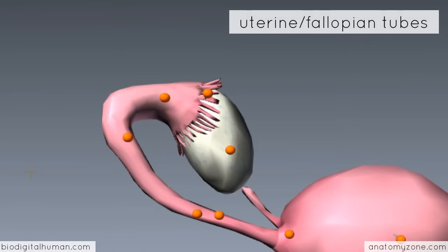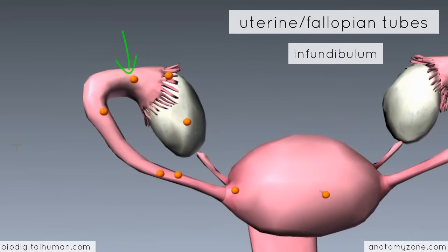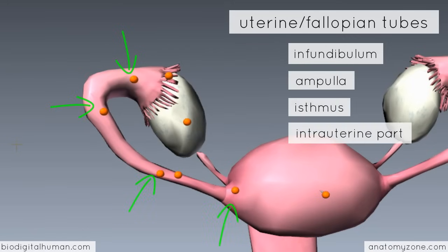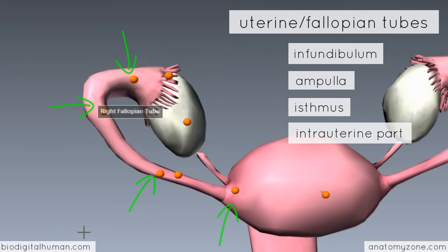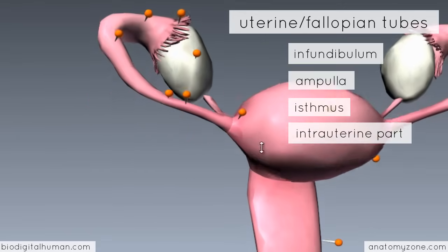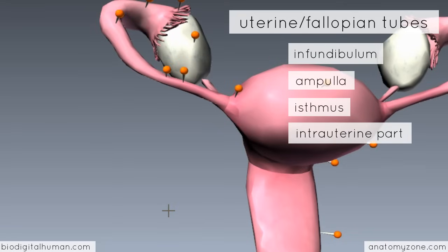The uterine tube has four parts: the infundibulum, the ampulla, the isthmus, and the intrauterine part. The fimbriae lead into the wide distal part, known as the infundibulum. Then we've got the ampulla, which is the middle and longest part of the uterine tube, and the most common site for fertilisation of the egg by male sperm. The medial third is called the isthmus, the narrowest part, which opens up into the uterus. Where the fallopian tube opens into the uterus is called the intrauterine part.